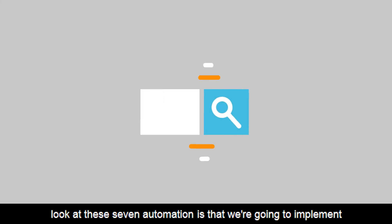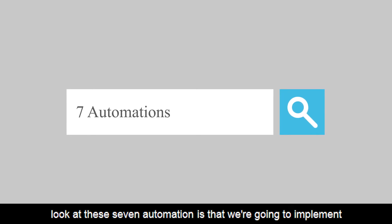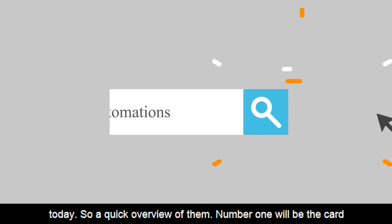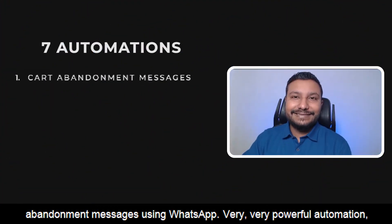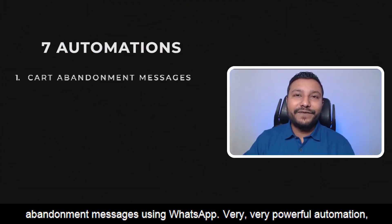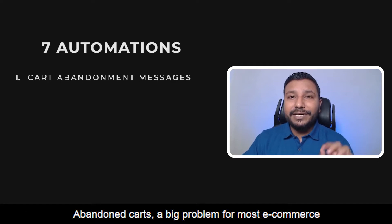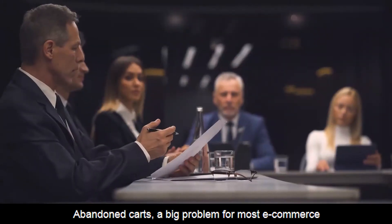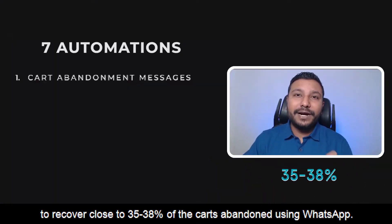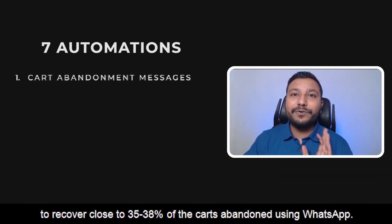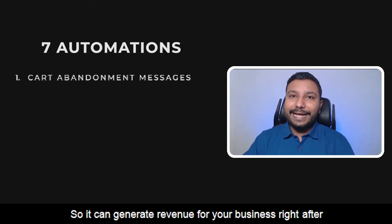Let's look at the seven automations we are going to implement today. Number one is the cart abandonment messages using WhatsApp — a very powerful automation. Abandoned carts are a big problem for most e-commerce companies, but with this automation we have seen that we are able to recover close to 35 to 38 percent of abandoned carts using WhatsApp.